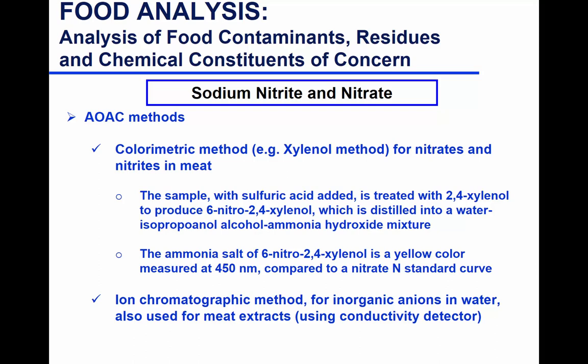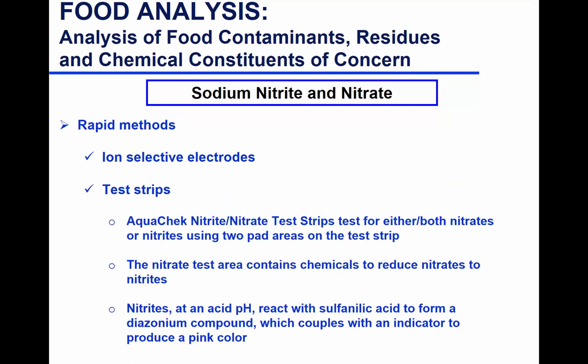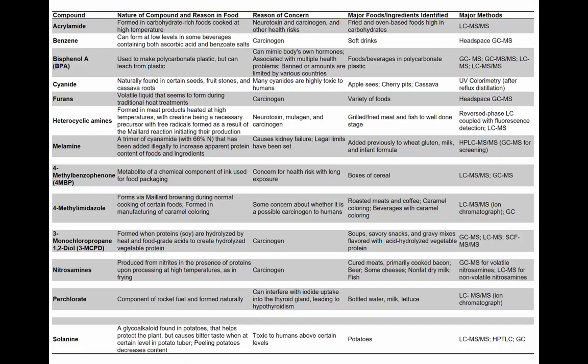Ion exchange chromatography is another method for inorganic anions. You can also measure nitrites and nitrates using selective electrodes — as discussed in the minerals chapter — or test strips. I won't go into details just because of time.